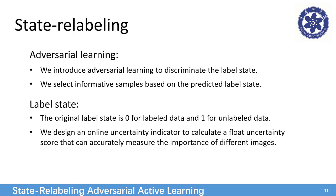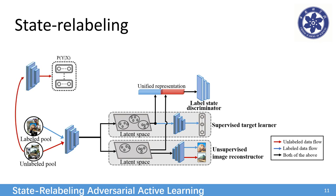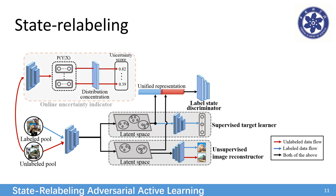Then, we introduce Adversarial Learning and build an online uncertainty indicator for State Relabeling. We build a discriminator predicting the State Label based on the representation, and to relabel the unlabeled sample with a more accurate state label, we design the indicator to calculate the uncertainty score based on the probability vector.